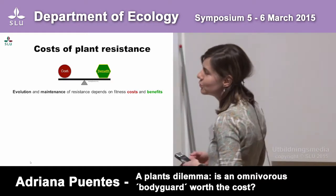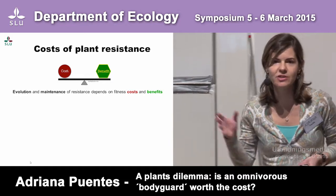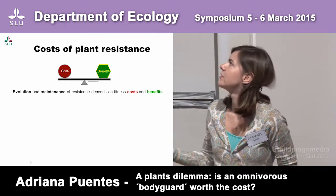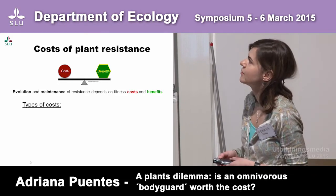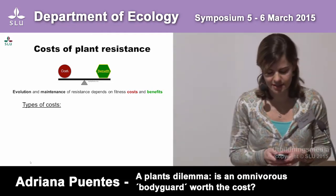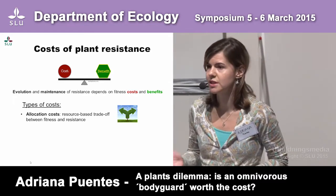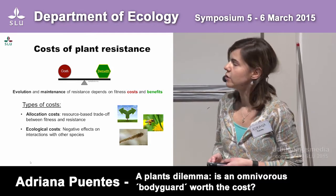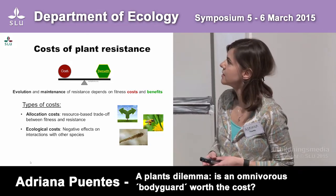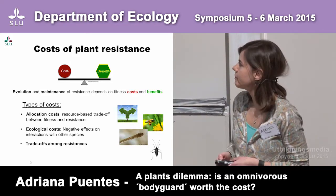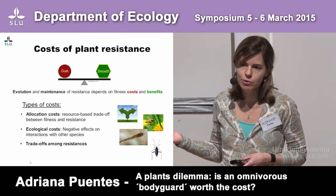The evolution and maintenance of any resistance strategy depends on the fitness costs it entails for the plant and the fitness benefits to the plant. There are different types of costs: allocation costs, which are resource-based trade-offs between resistance and fitness; ecological costs, where engaging in an interaction for resistance can affect other interactions negatively; and trade-offs among resistance, where being resistant to one herbivore can make you more susceptible to another.